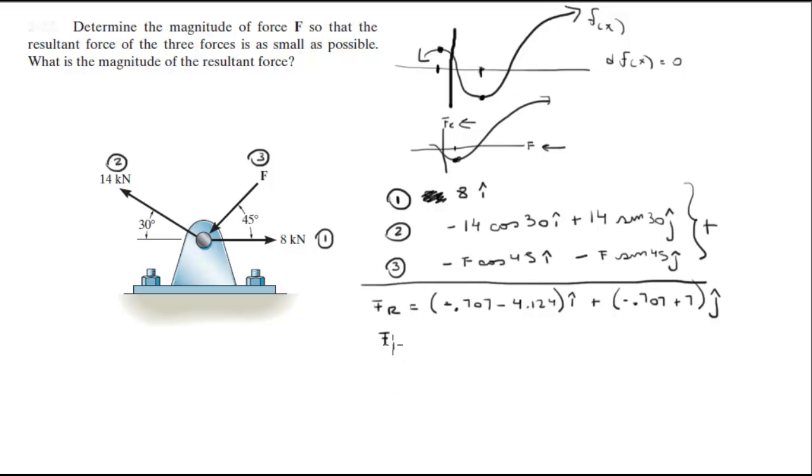But you know that F_R squared is equal to the x component plus the y component. This being the x component and this being the y component. So when you plug them in, you're going to get that F_R squared is equal to (negative 0.707f minus 4.124) squared plus (negative 0.707f plus 7) squared. When you calculate all this, you're going to get that F_R squared is equal to f squared minus 4.067f plus 66.